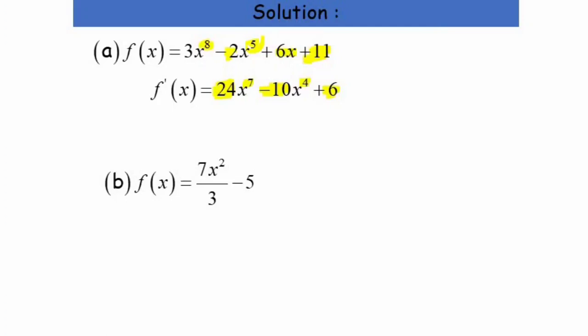For part b, differentiating 7x²/3 − 5: the answer is 14/3. We get this by multiplying 2 by 7 to get 14, keeping the denominator 3, and subtracting the power by 1 to get 14x/3. Differentiating −5 gives 0, so f'(x) = 14x/3.